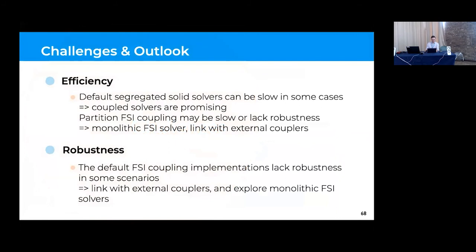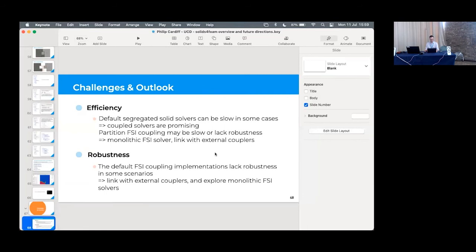Some future directions for solids4foam: efficiency and robustness — the code works but can be slow or not robust in some cases, which is a general challenge with FSI procedures. New block-coupled methods are one way to speed things up. Monolithic methods are a longer-term goal. Also, linking external couplers like preCICE, which benchmarks show can outperform the built-in coupling. These slides will be uploaded to ResearchGate after this session.